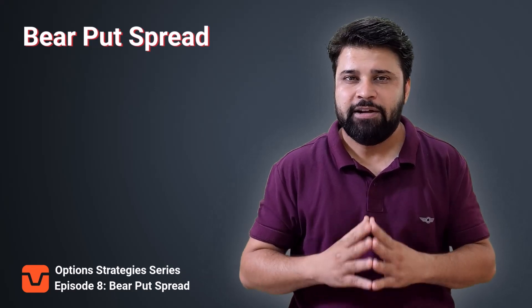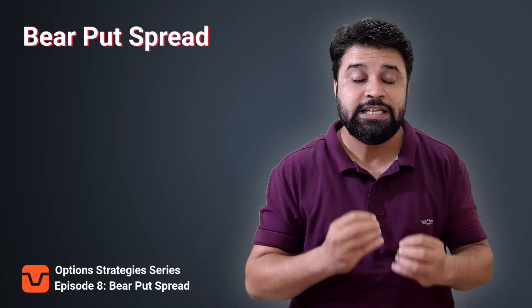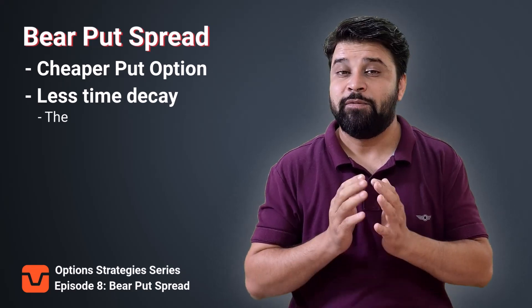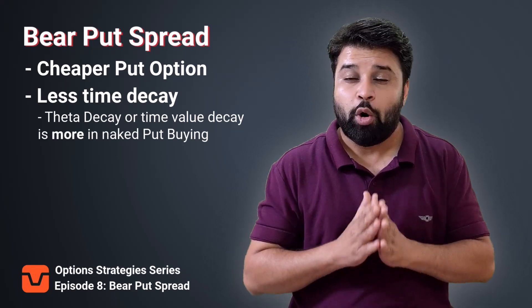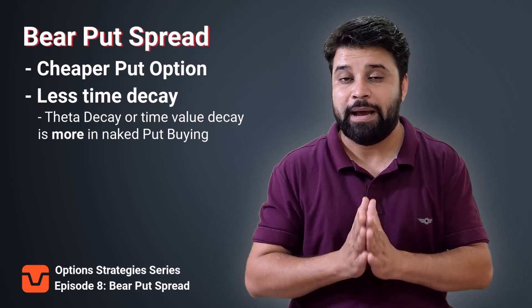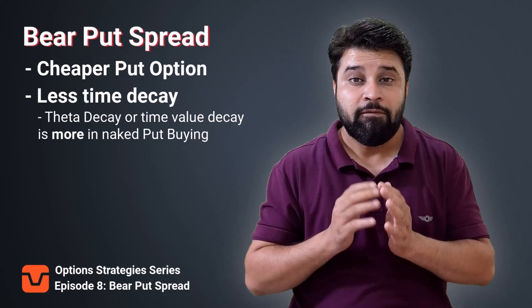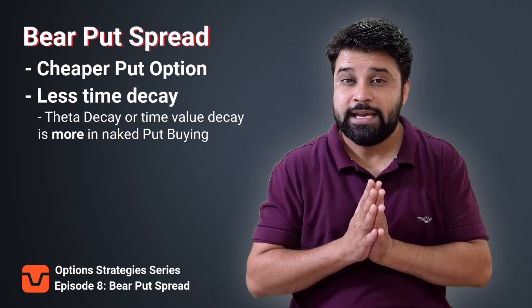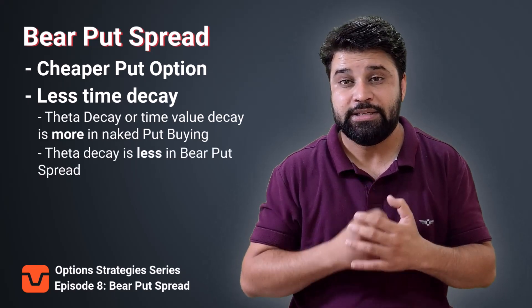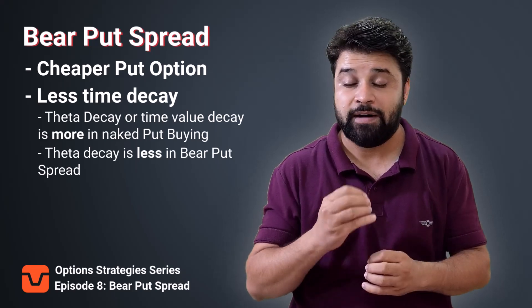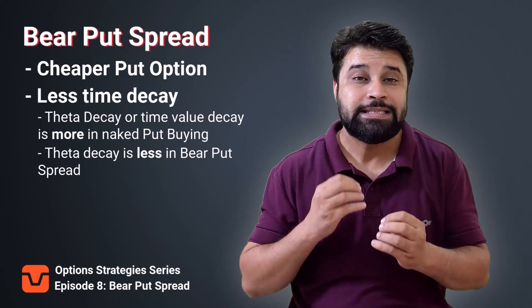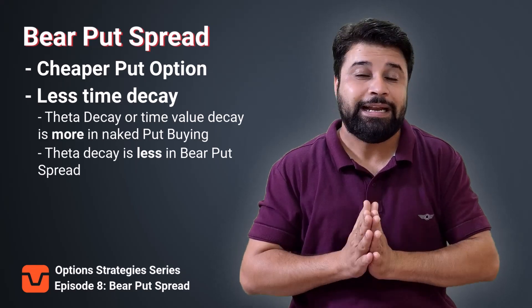In today's video we are going to discuss the bear put spread strategy. Simply defined, a bear put spread is a cheaper put option with less time decay. When you buy a naked put option, the time decay — the rate at which the option price declines due to the passage of time — is very high, which ends up reducing the premium and thereby contributing to your loss. Whereas when you do a bear put spread, this time decay is lower, so your premium won't lose its value as fast as a naked put buy, because here you will receive back some premium by selling a put option, which reduces the net cost of your strategy.